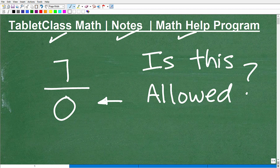Okay, so let's get to the question here. 7 divided by 0. All right, so is this allowed?